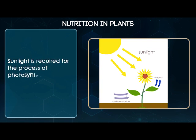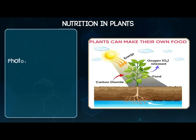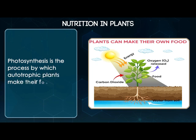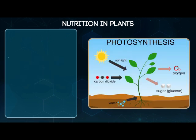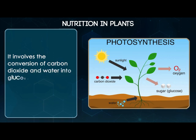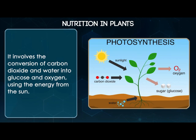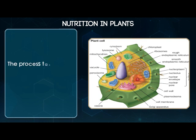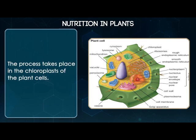Sunlight is required for the process of photosynthesis. Photosynthesis is the process by which autotrophic plants make their food. It involves the conversion of carbon dioxide and water into glucose and oxygen using the energy from the sun. The process takes place in the chloroplasts of the plant cells.